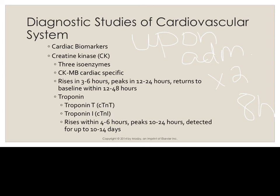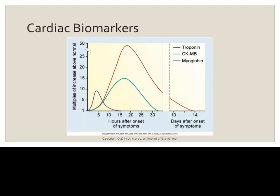The troponin has two types: Troponin T and Troponin I. We're not going to learn the specifics about those individually — they're drawn right along with the CKMB. Troponin starts to elevate four to six hours after onset of myocardial tissue damage, peaks in 10 to 24 hours, but stays detectable in the blood for up to 10 to 14 days. This makes it a better marker because it lasts so much longer. You do not have to know the norms, but understand the timing of onset, peak, and how long each stays in the blood. There's a picture showing how much longer troponin stays in the system versus CK. We will not learn about myoglobin.